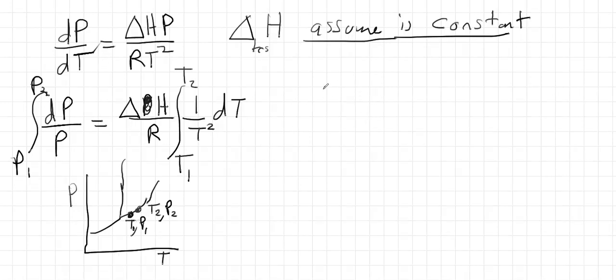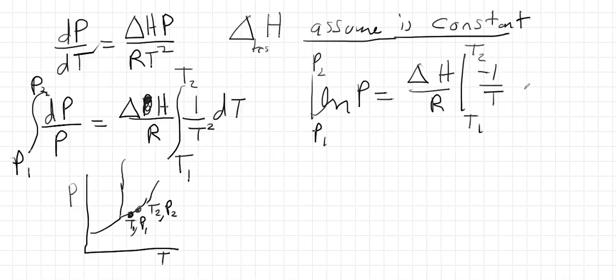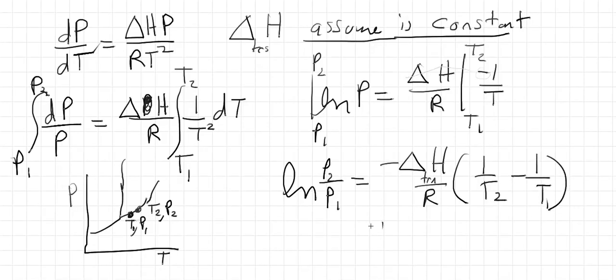So let's go ahead and do the integral. We've got the log of pressure evaluated at P2 and P1. On the other side, we've got delta H over R, and we're going to evaluate at T2 and T1. The integral of 1 over T squared is negative 1 over T. We can pull out the negative sign and put it over here. That will give us the log of P2 over P1 is equal to negative delta H of transition over R times 1 over T2 minus 1 over T1. And that is the Clausius-Clapeyron equation.